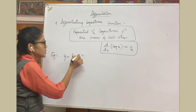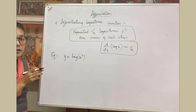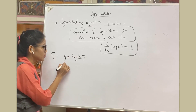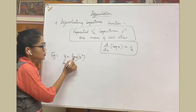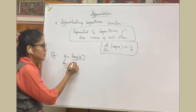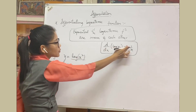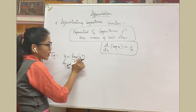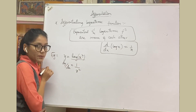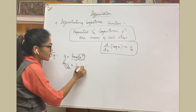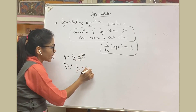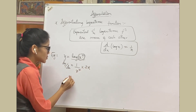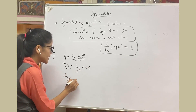Example 1: Differentiate y = log(x²). Applying chain rule, dy/dx = 1/x² · 2x. The x terms cancel, giving dy/dx = 2/x.